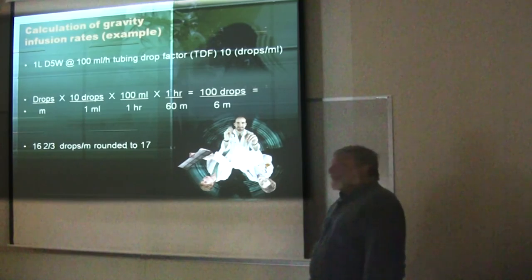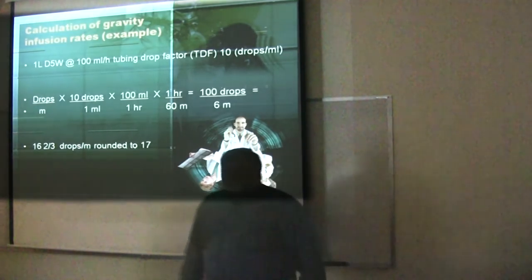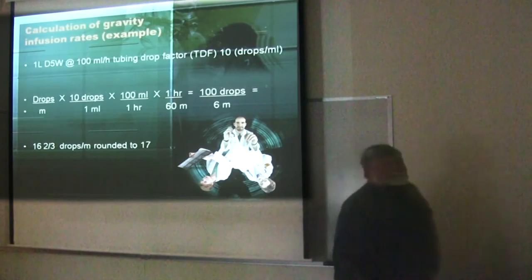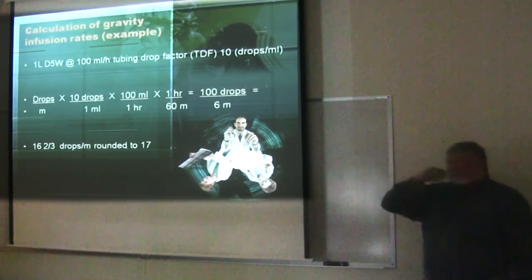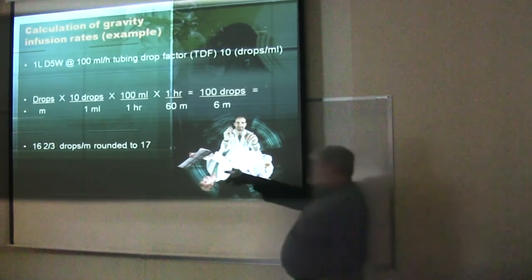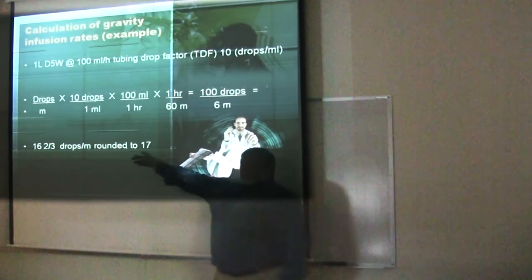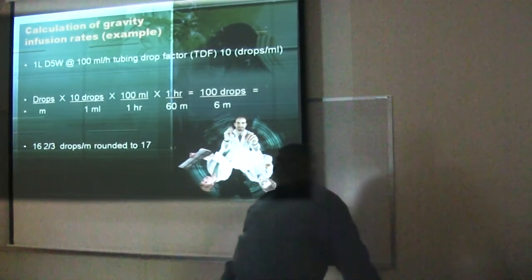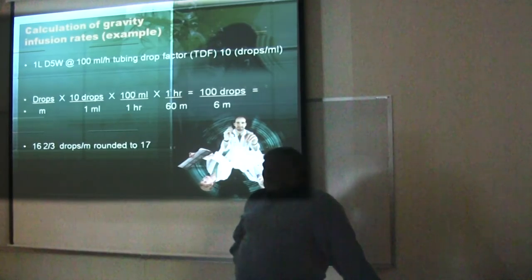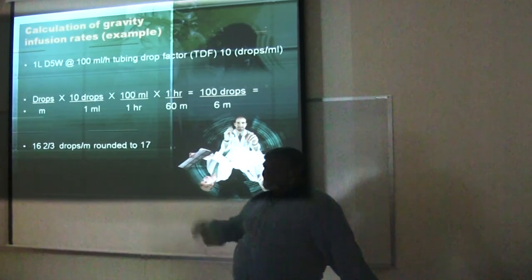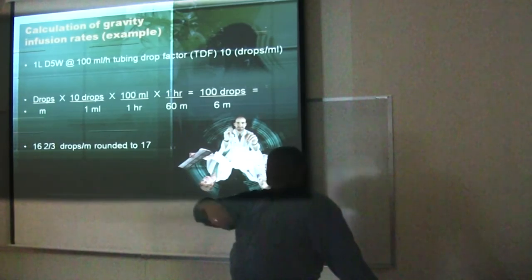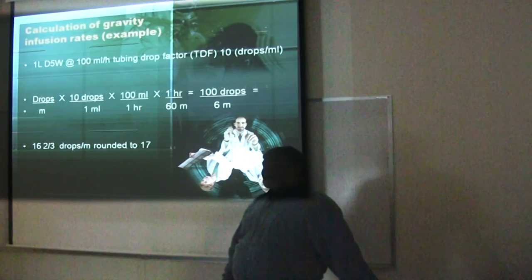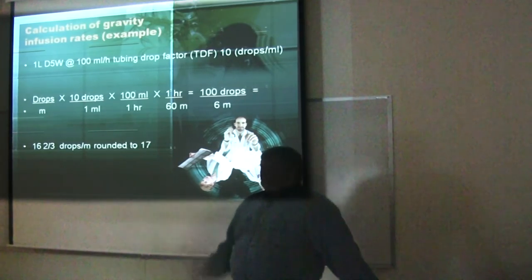It's a minute for the NCLEX; the ED might be 30 seconds. What do you mean by how long do you count? Well, you're saying 17 drops over a minute, but it's a really busy day. At 30 seconds you might say, 'I got between 8 and 9 drops — good to go.' It's like taking a pulse: do you assess for 15 seconds and multiply by 4, or do you count for a full minute?